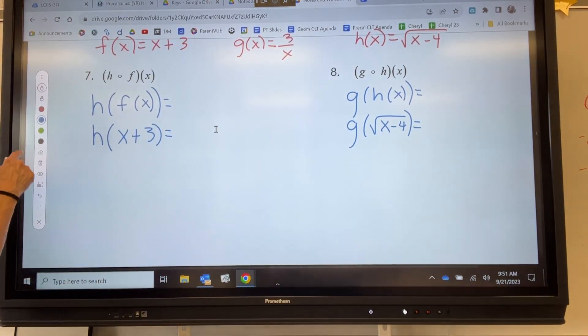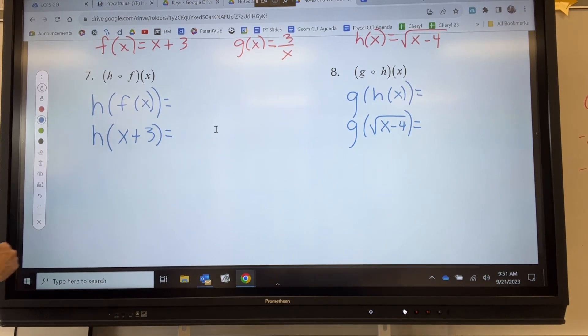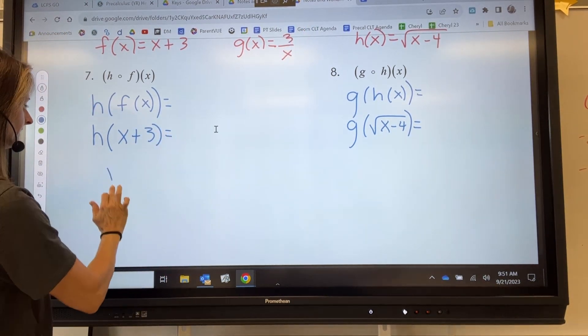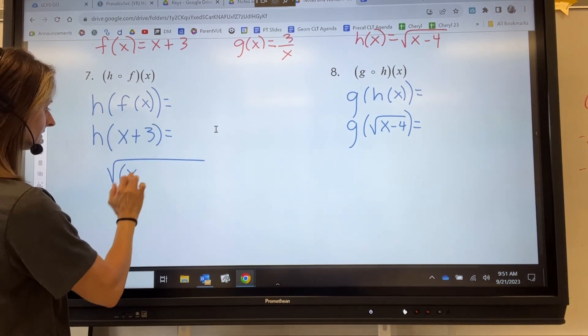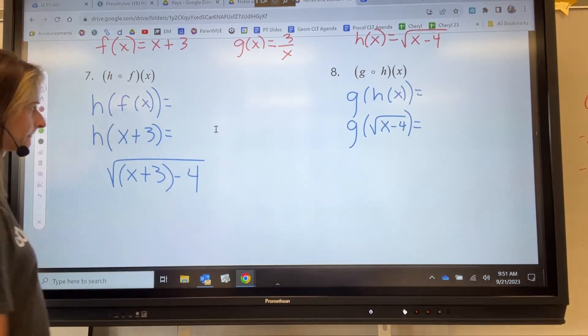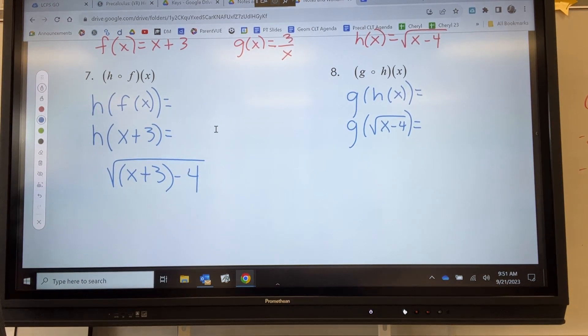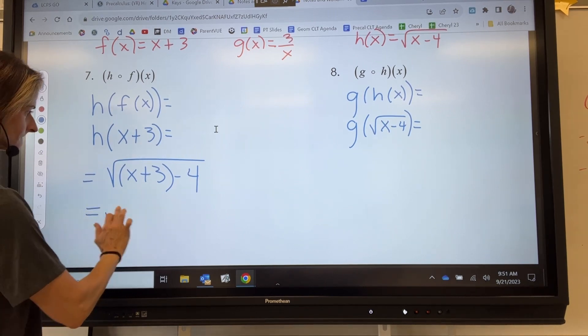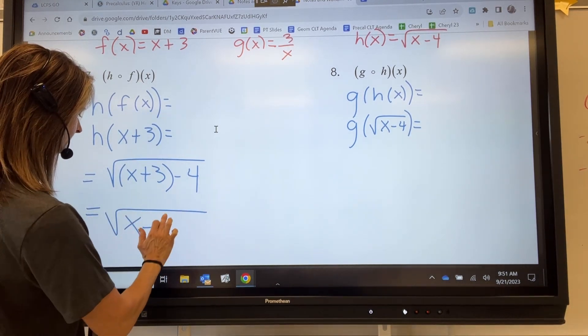Let's go ahead and plug in x plus 3 into h of x for x. Our new x is x plus 3, x plus 3, and then minus 4. That's h of f of x. Simplify it. And we just have x, what is that, minus 1?